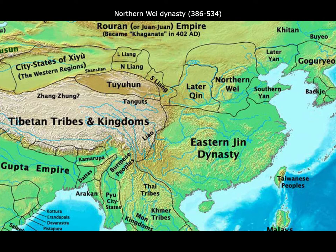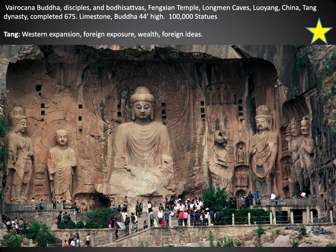The Northern Wei was the most enduring and powerful of the northern Chinese dynasties that ruled before the reunification of China under the Sui and Tang dynasties. Buddhism, born in India, was transmitted to China starting as early as the first century CE. Buddhism brought to China new images, texts, ideas about life and death, and new opportunities to assert authority.